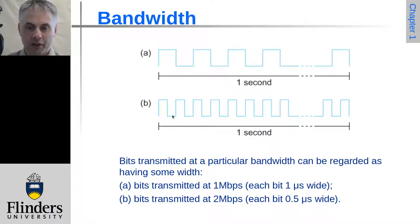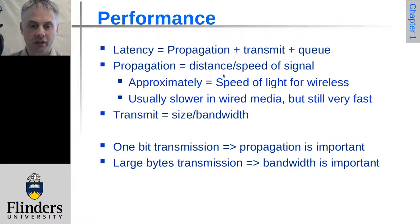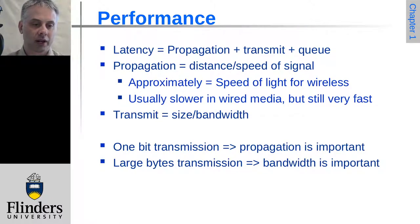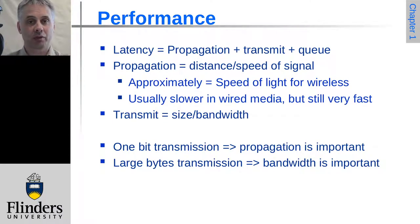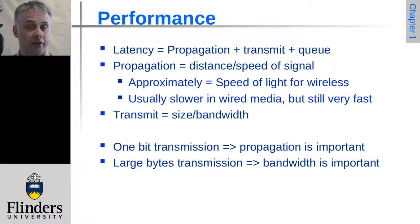This has a number of implications, because not only does the link have a speed in terms of how frequently bits are pushed out onto the link, there's also the question of how long it takes for a signal to propagate, how long it might spend in the queue before it gets transmitted, as well as the actual time it takes to transmit it. These three things together create the total latency — the delay from when a message is issued to when it's actually received. The transmission speed is what we're talking about with the bandwidth of the link in bits per second.